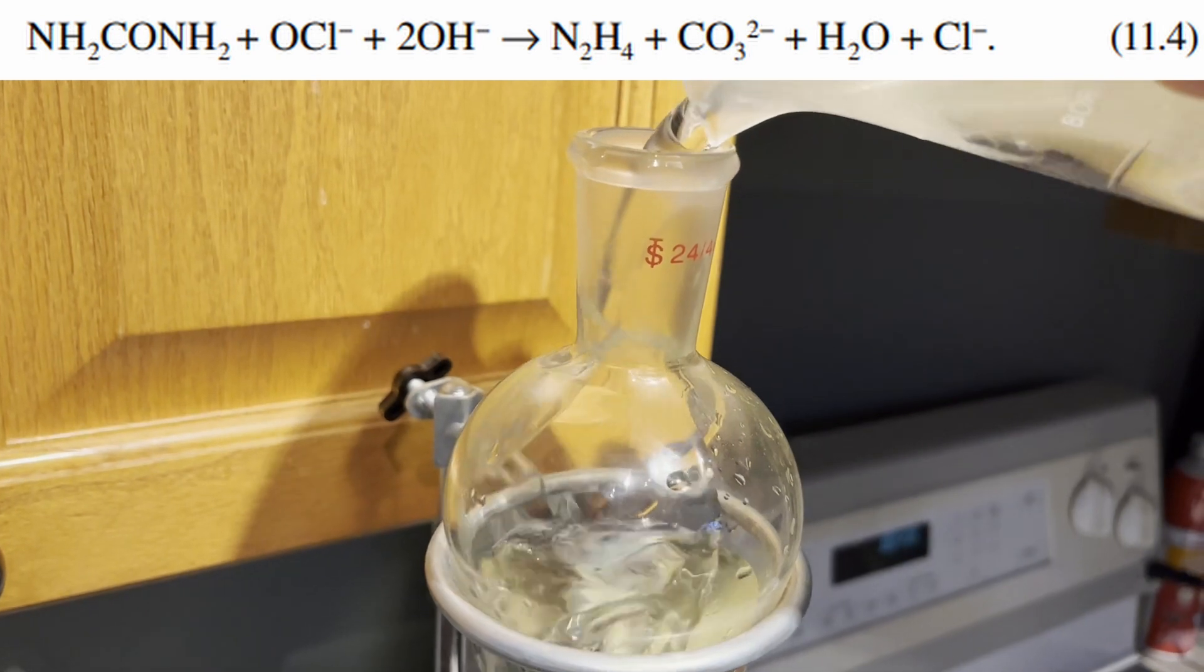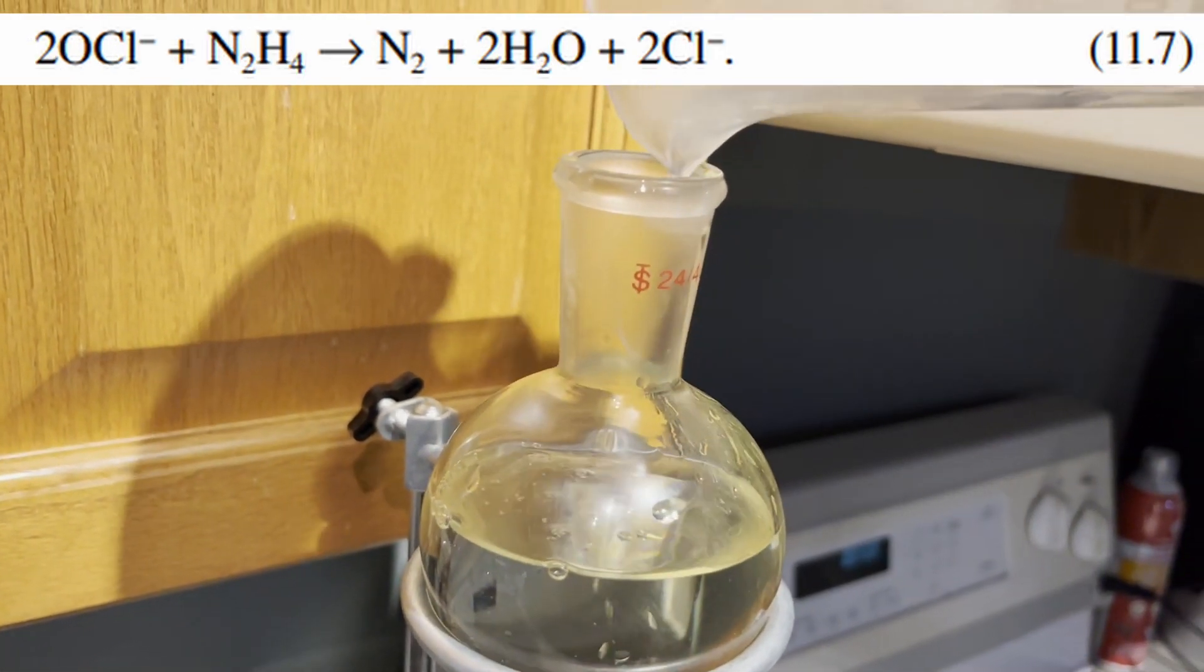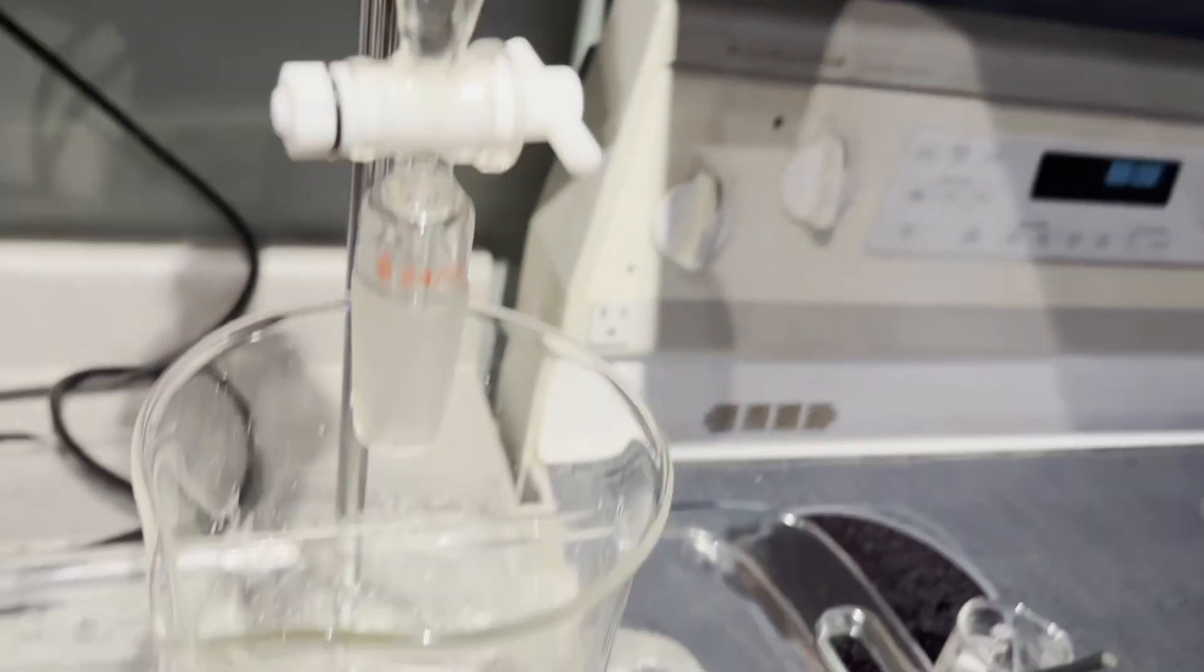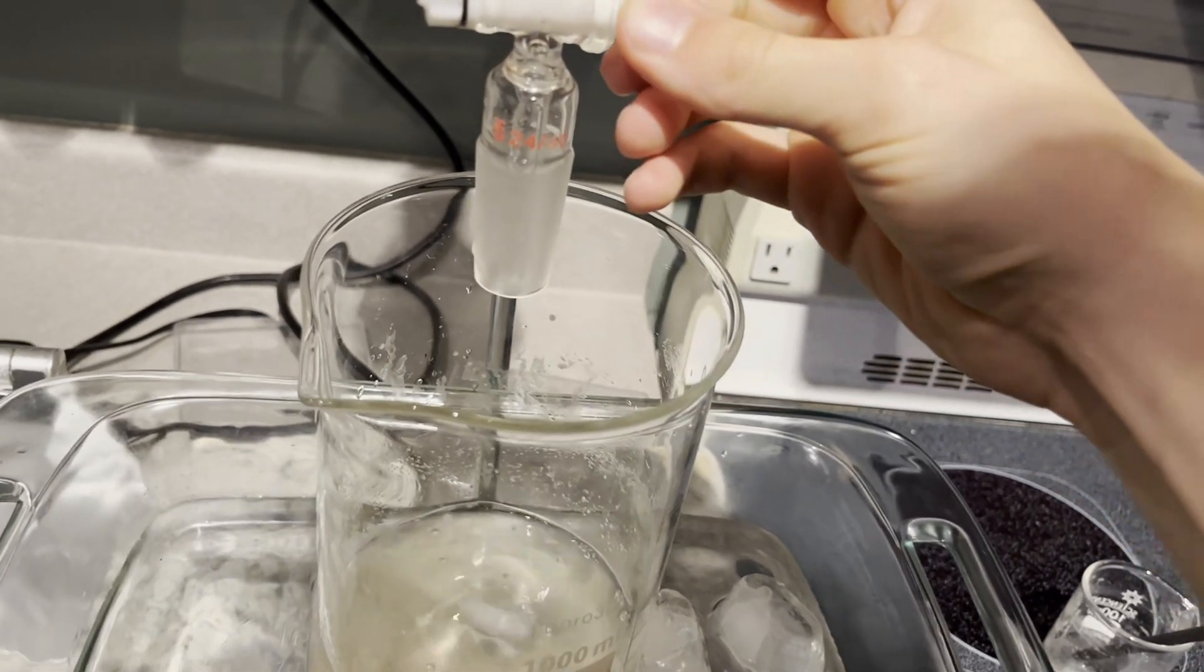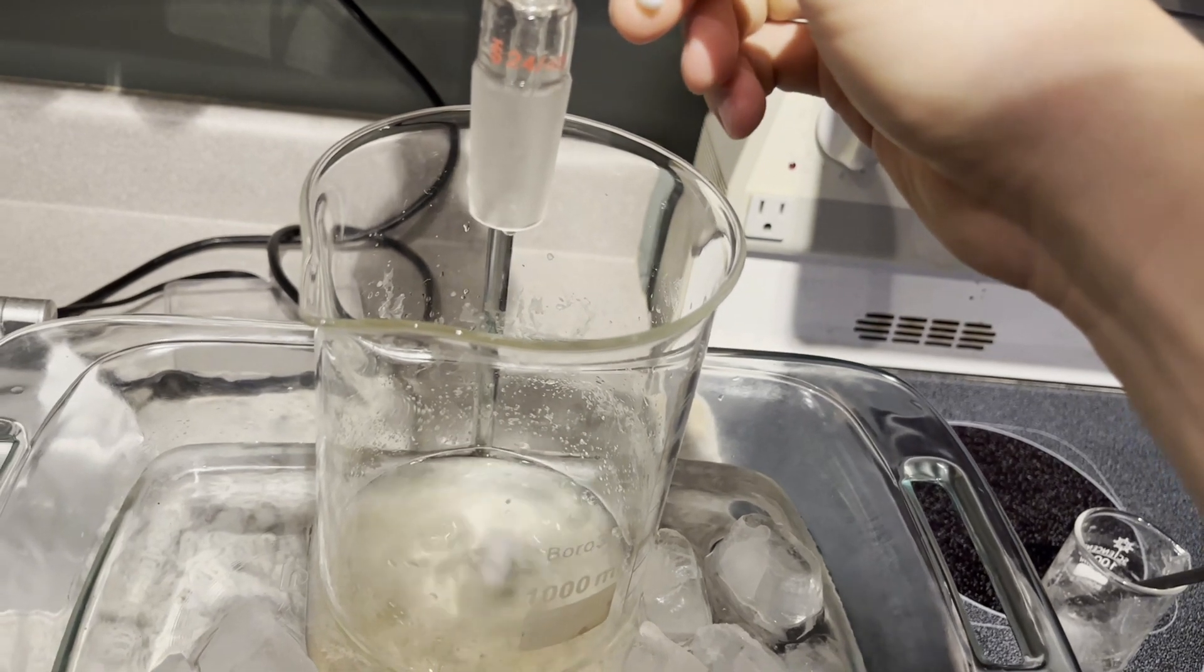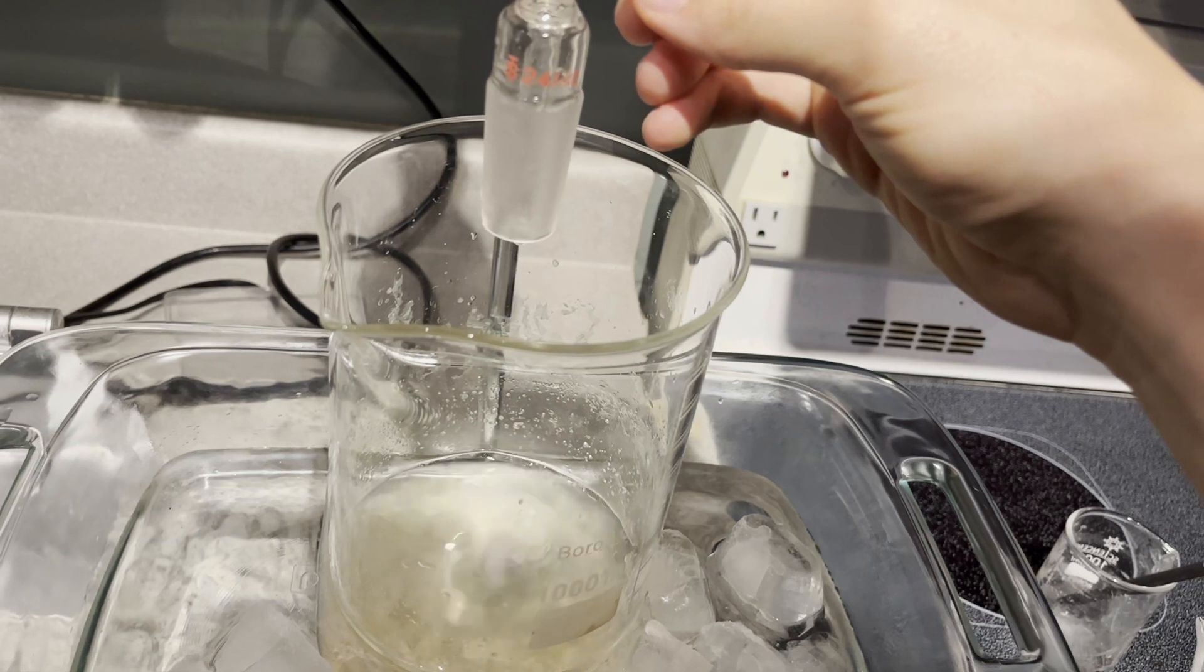Reaction 11.4 shows the synthesis of hydrazine and this is the degradation of hydrazine in the presence of any metal ion catalyst. The bleach should be added in such a way that the temperature doesn't rise above 10 degrees Celsius. This should correspond to about 5 or 6 drops per second and the total addition taking a little over 30 minutes.